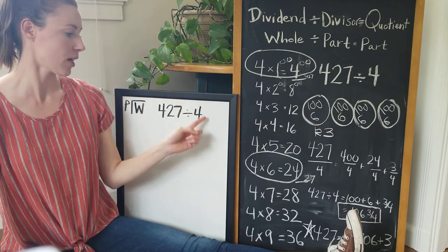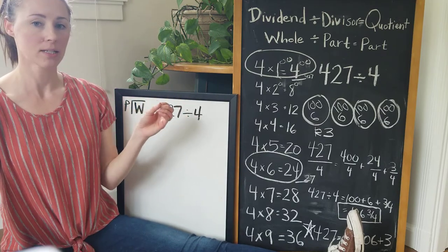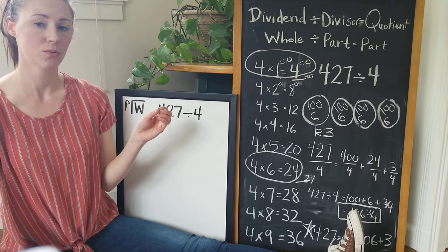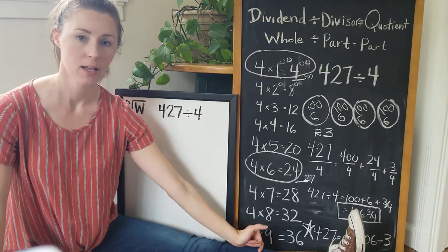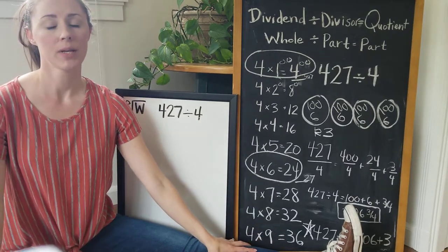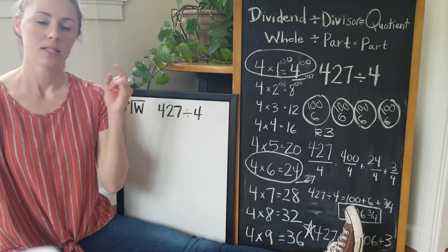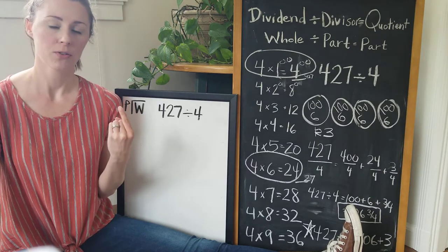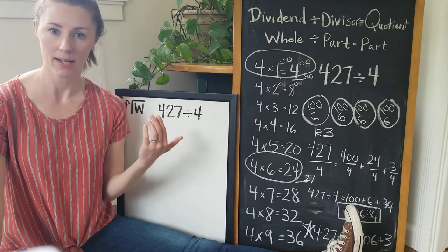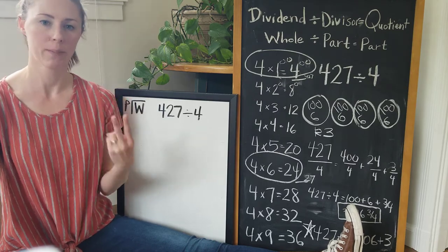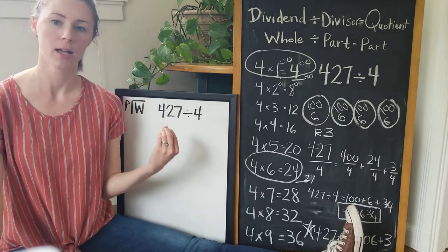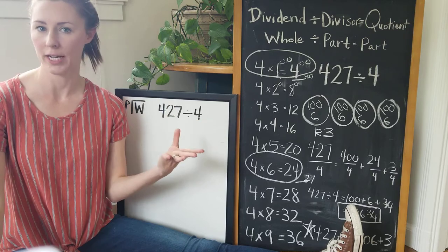Whatever your divisor is, this one is four, we're going to start the exact same way that we've been starting, which is to write the single digit facts for four, for one through nine. Remember we write this down because there's only a single digit for each place value. So if I move on to 10, that's a two digit number. I can't place a two digit number in a single digit spot.